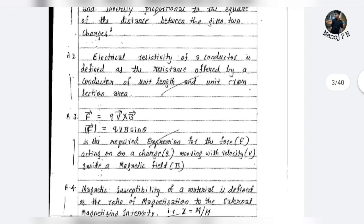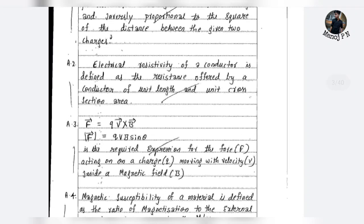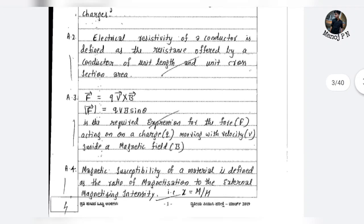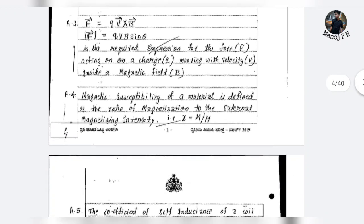Electric resistivity of a conductor is defined as the resistance offered by a conductor of unit length and unit cross-sectional area. This definition should be written correctly.